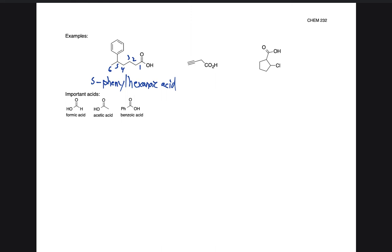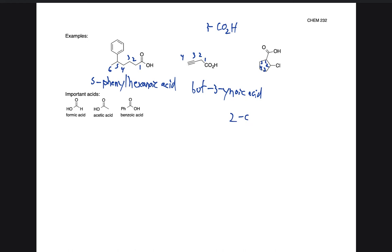The next one — the CO2H is the abbreviation for carboxylic acid. Here we have carbon one, two, three, four — a total of four carbons. At the three position we have an alkyne, so we would say but-3-ynoic acid. For the last one, we have the carboxylic acid coming off of a ring. In this case, position one is at the start of that ring. Putting it all together, we would have 2-chlorocyclopentane carboxylic acid.